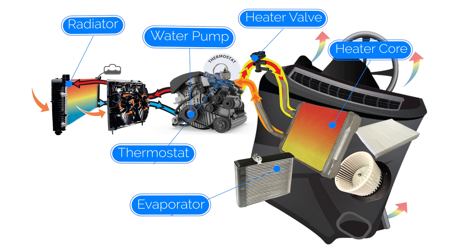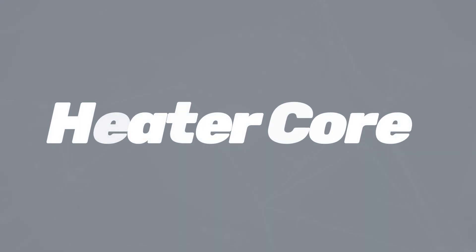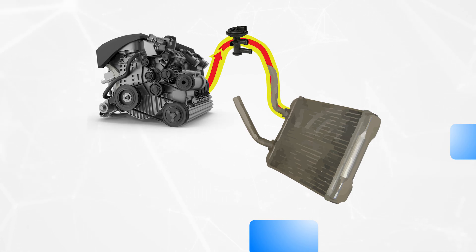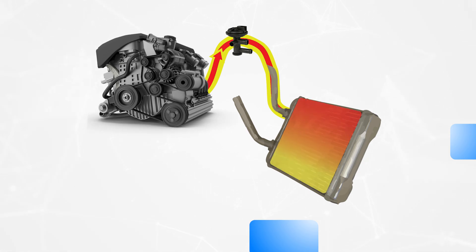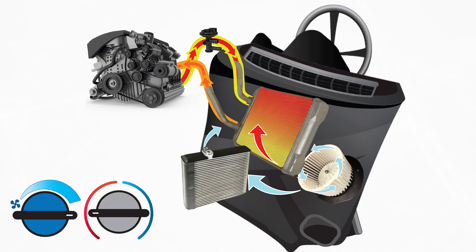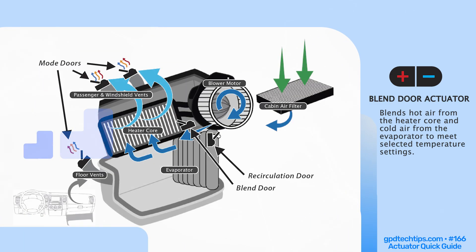Like the radiator, the heater core is also a heat exchanger. As high temperature coolant disperses across the heater core's metal fins, heat is radiated — approximately 130 degrees Fahrenheit depending on the selected climate control settings. The blower motor will direct airflow across the heater core towards the passenger cabin. In addition to blower motor speed, climate control settings will also adjust the position of actuator doors to reach the selected temperature and open or close selected vents.